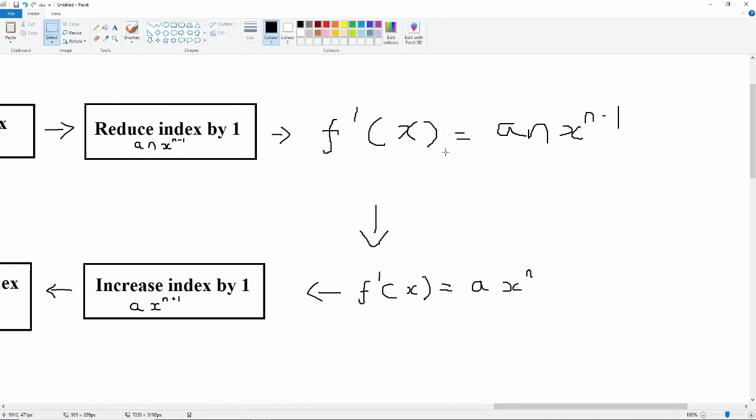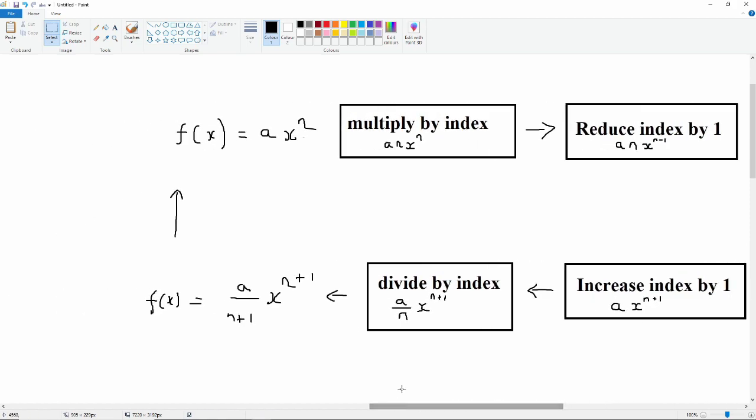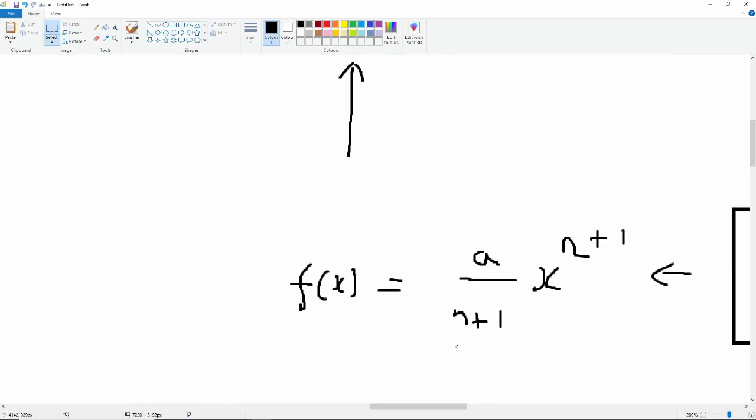And that's our derivative. So when we go backwards, we have our ax to the power n. So we increase the index by 1, so we get a times x to the power n plus 1, and then we divide by the new index. And that is wrong.